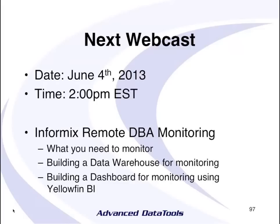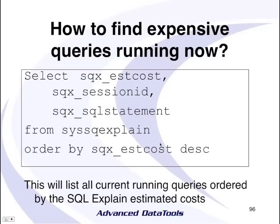A question came in: do you have to have SET EXPLAIN on to see the data in SysSQLExplain? The answer is no. This tells you what is running right now in the server and what cost the optimizer assigned. Setting EXPLAIN on dumps that into a file for you to save, but the optimizer has to figure out this cost regardless. In the next webcast, I want to talk more on SQL tracing, which allows you to capture more detail — not just cost but execution time and what else is going on in that query.